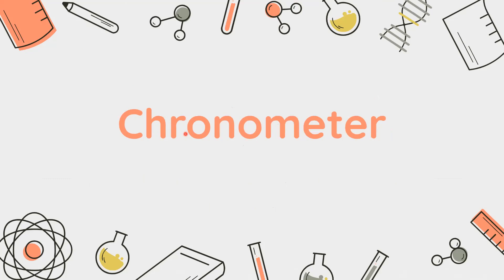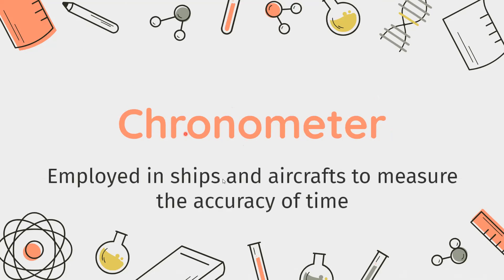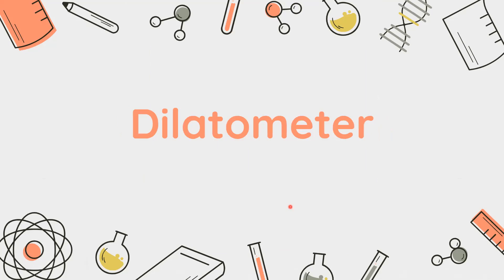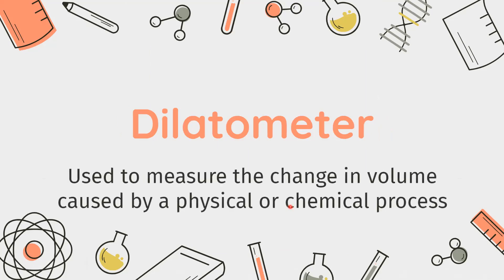Next is the Chronometer. The Chronometer is employed in ships and aircraft and is used to measure the accuracy of time. Next is the Dilatometer. It is basically used to measure the change in volume that occurs due to a physical or chemical process.